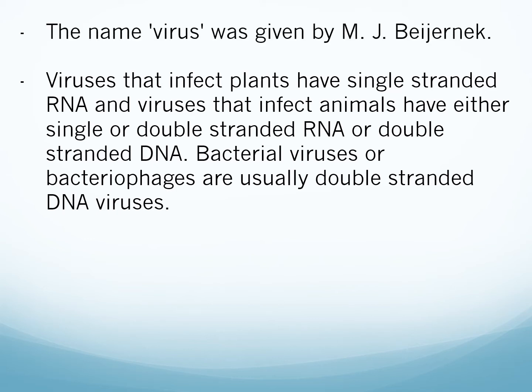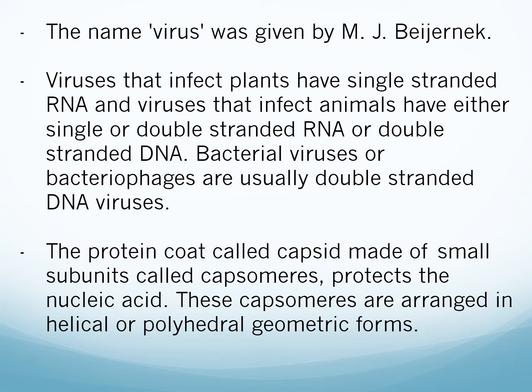The name virus was given by M.J. Beijerinck. The protein coat called capsid is made up of small subunits called capsomeres, which protect the nucleic acid. These capsomeres are arranged in helical or polyhedral geometric form. The nucleic acid — which can be RNA or DNA — is protected by the capsid coat, which is made up of protein.